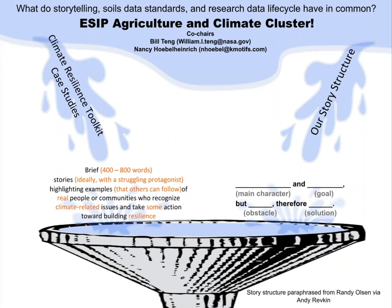There are two components flowing together. The first component is the Climate Resilience Toolkit Case Studies — brief stories highlighting examples of real people or communities who recognize climate-related issues and take some action towards building resilience. The second part is our story structure, a paraphrase from Randy Olson and Andy Ruskin, which has a main character and a goal, but an obstacle, and then therefore a solution. Keep an eye out for this throughout the rest of the presentation.